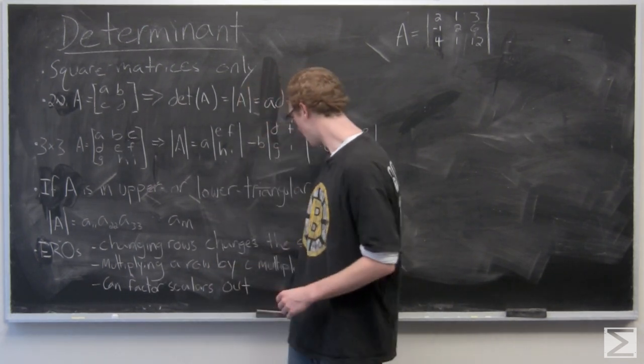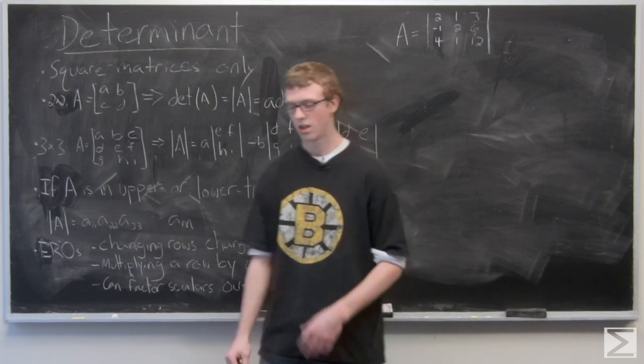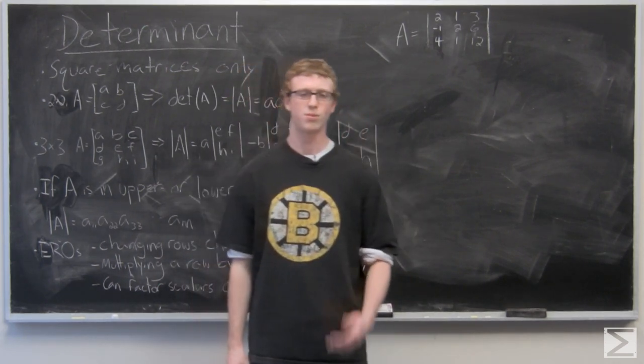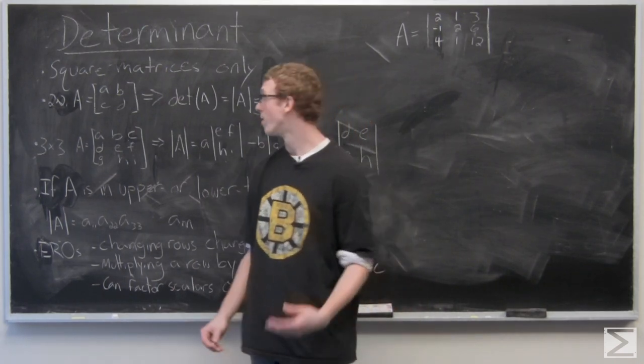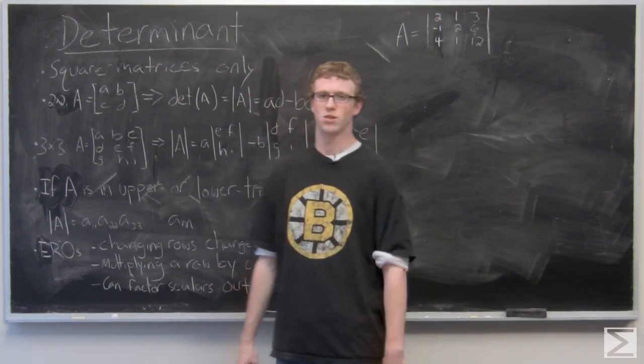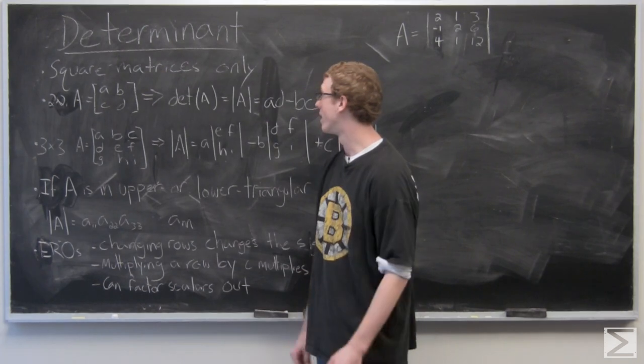The determinant can only be found for a square matrix. So the most basic examples that we normally look at, the most often used examples, are 2x2 and 3x3 matrices. So that's what we're going to take a look at right now.